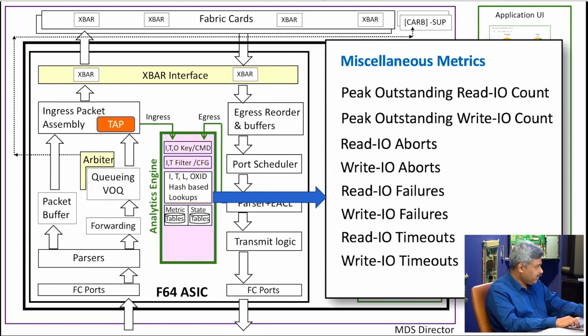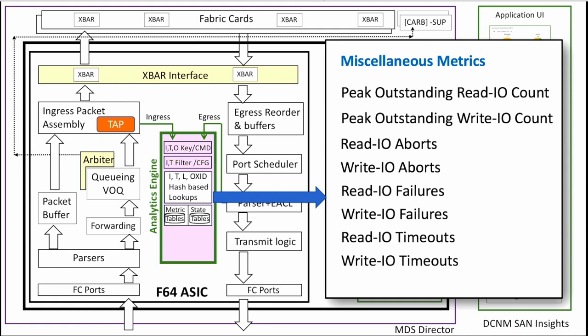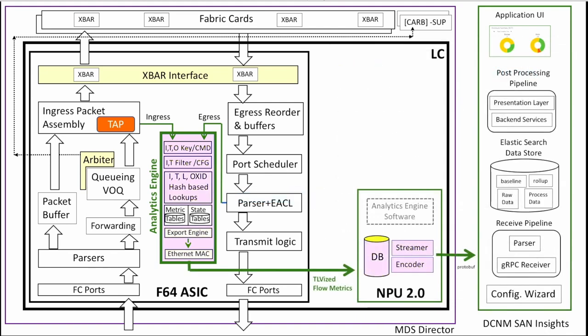Time stamping is done inside the chip with nanosecond-level accuracy — unlike sending it outside where it sits in a buffer before being timestamped. This is very important because NVMe dictates that performance must be very fast; the time the switch sees is the actual timestamp, not something measured outside. The chip periodically exports the collected table to the NPU, which builds a larger database with a longer history. Then, similar to 32 Gig, it sends data to DCNM through gRPC to create the database for visualization.